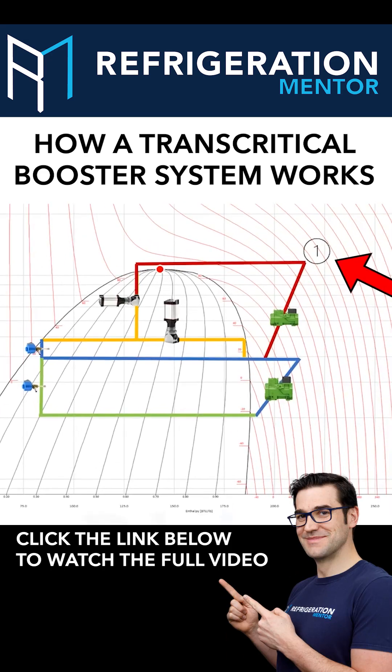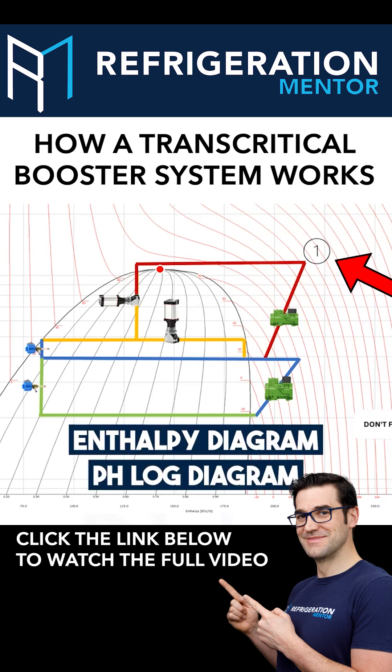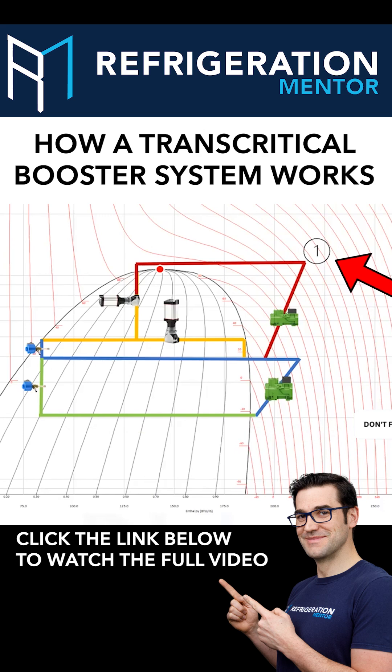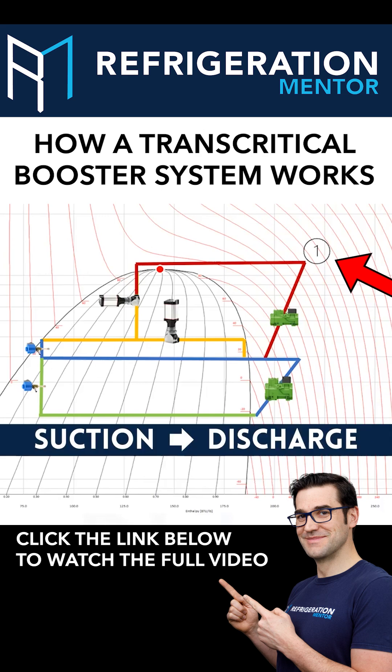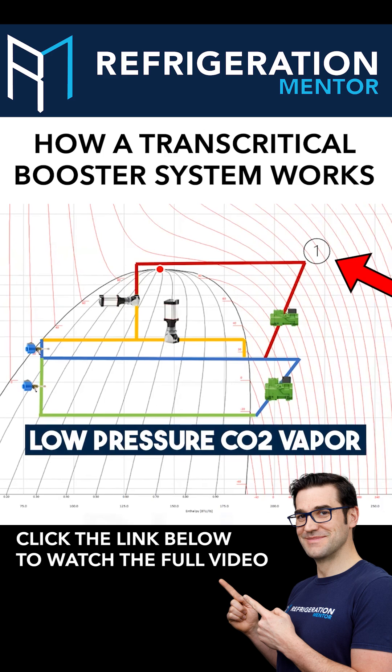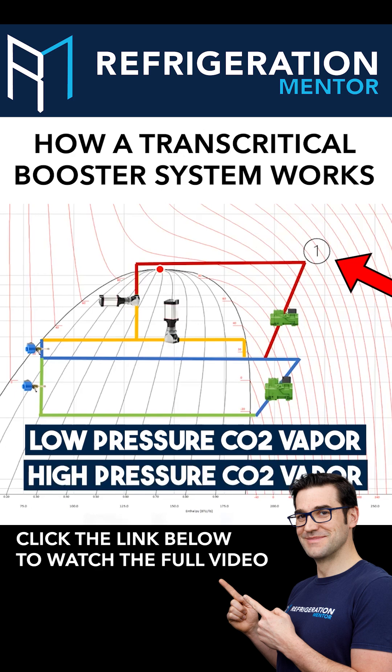If you're looking at the screen, we get this 0.1. So if you think about the enthalpy diagram or the pH log diagram, and I'm going to call it the log diagram going forward, the first step is going from your suction to your discharge. So you have that low pressure CO2 vapor going into a high pressure CO2 vapor.